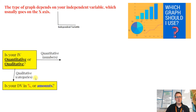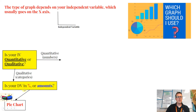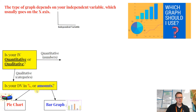If your IV is qualitative — categories of some kind — then you need to decide: is my DV going to be a percentage or an amount? If your DV is percents, you'd use a pie chart. If it's amounts, you'd use a bar graph.